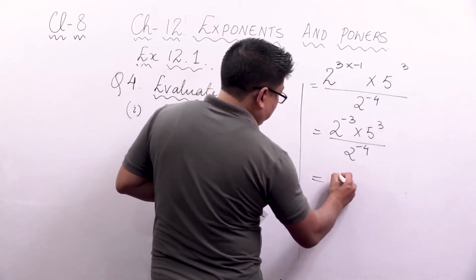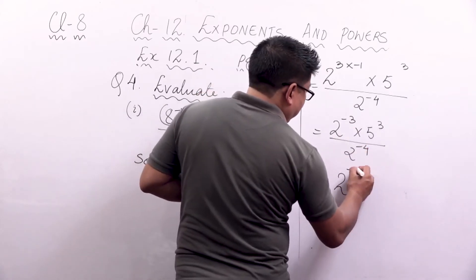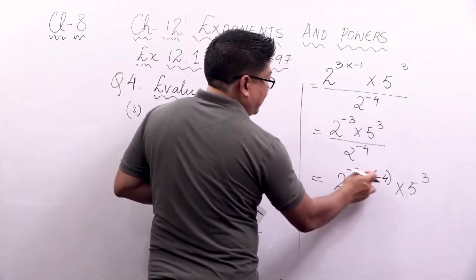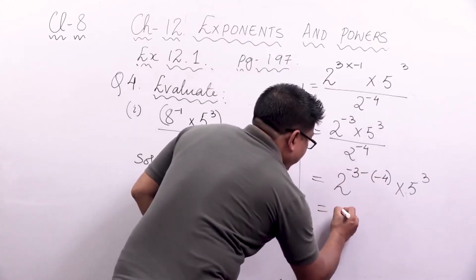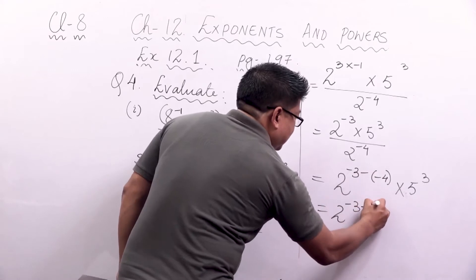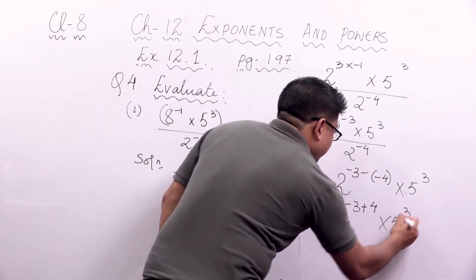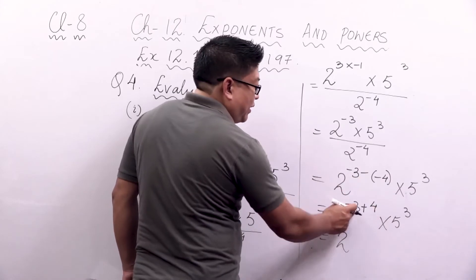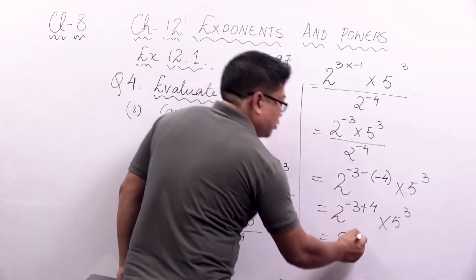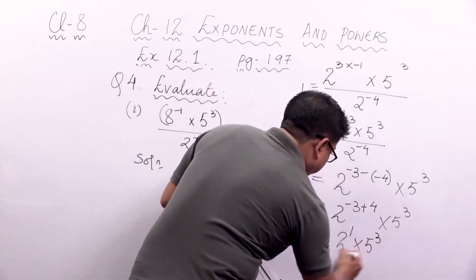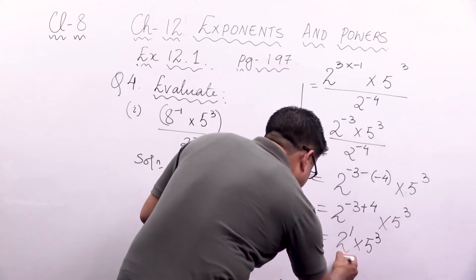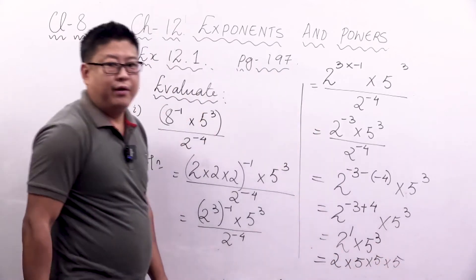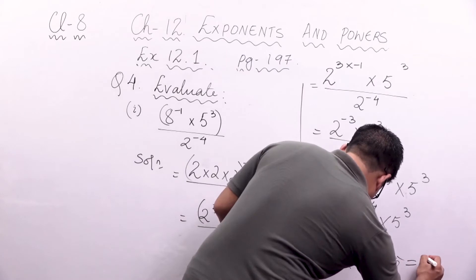Now we will take the two bases of 2 together. Since it is divided, we subtract the powers: minus 3 minus minus 4, into 5 to the power 3. That gives minus 3 plus 4, which is plus 1. So we have 2 to the power 1 into 5 to the power 3, which is 2 into 5 into 5 into 5, and when you multiply all this you get 250.